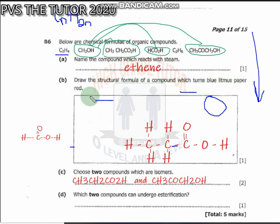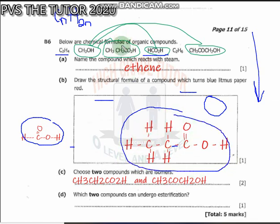Draw the structural formula of a compound which turns blue litmus paper red. When we go to acids, bases, and salts, acids are the only ones that turn blue litmus paper red. We have acids because of the presence of COOH, the carboxyl group. This gives us a carboxylic acid. The two oxygen atoms - C=O and O-H - give us a carboxylic acid.